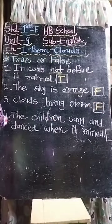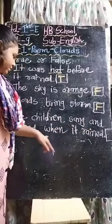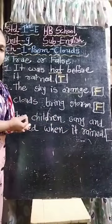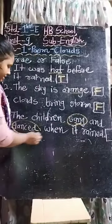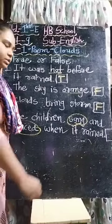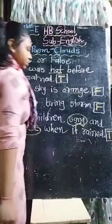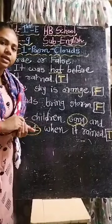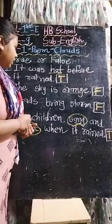Now fourth one: 'The children sang and danced when it rained.' जब बारिश हुई थी तब children ने क्या किया? Sang किया और dance किया - यानि कि गाना गाया और dance किया. Is it true or false? True. Answer is true, because जब बारिश होती है children गाना करते हैं और dance करते हैं.